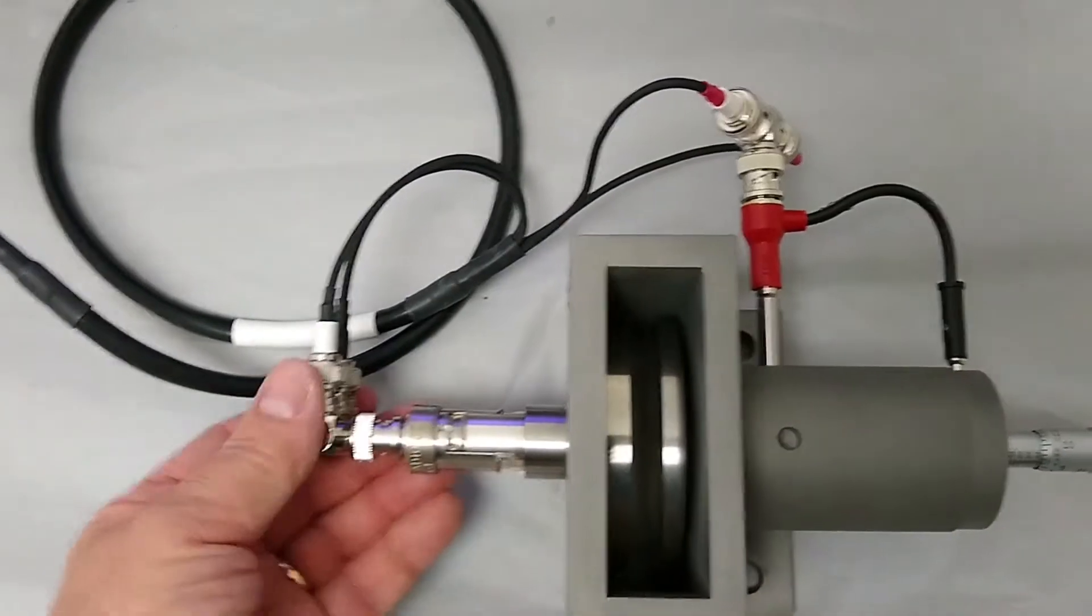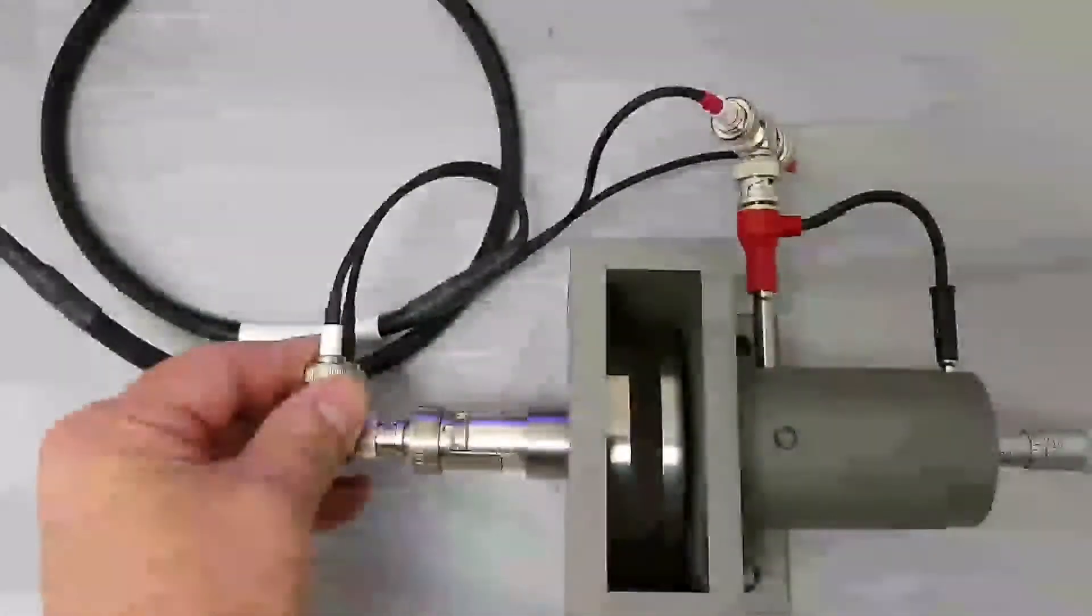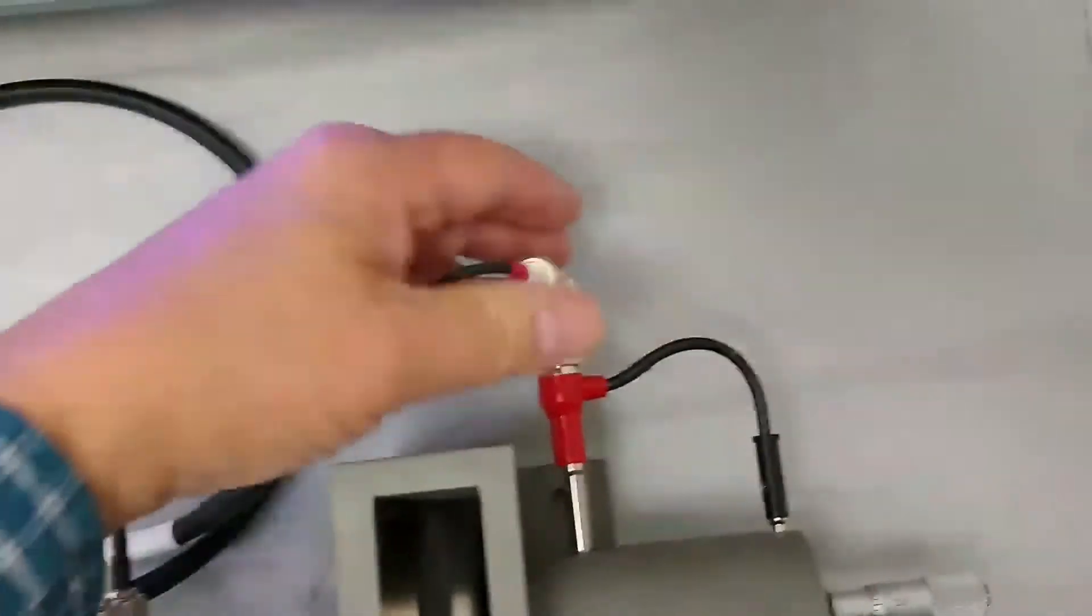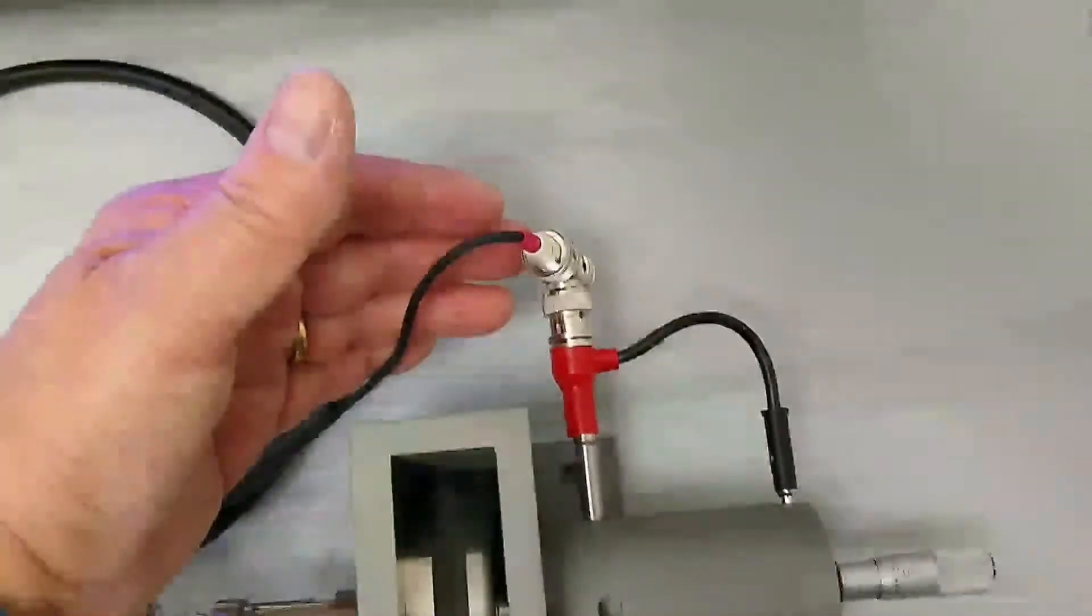You can see the 874 connected here along with the T. You can see that we've got it set up for basically measurement configuration, BNC-T here, out to banana with the pigtail.